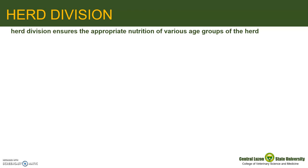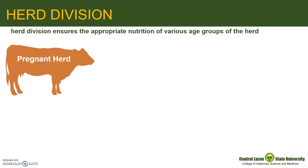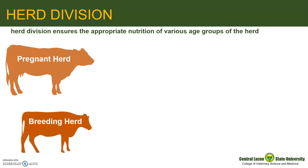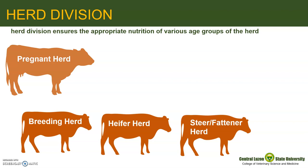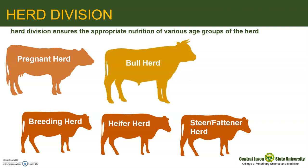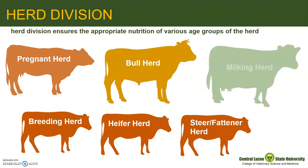In a large ruminant farm, animals may be divided into: a pregnant herd composed of pregnant females; a breeding herd consisting of dry cows and heifers ready for breeding — after the breeding season, pregnant animals are transferred to the pregnant herd; a heifer herd composed of heifers not yet ready for breeding, with heifer calves included after weaning; a steer or fattener herd consisting of growing cattle and those to be fattened for the market; a bull herd consisting of mature males kept mainly for servicing breeding cows. For dairy cattle or water buffalo farms, a milking herd is added, composed of lactating animals used for milk production.